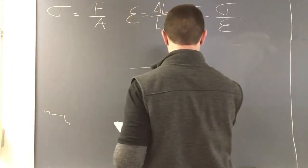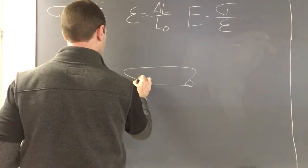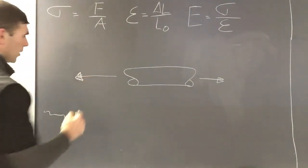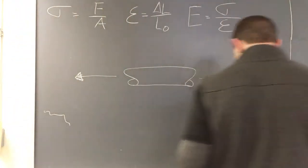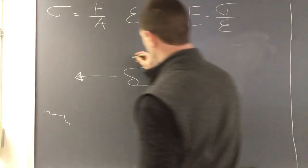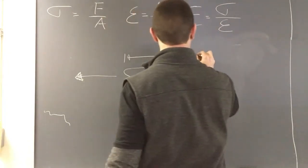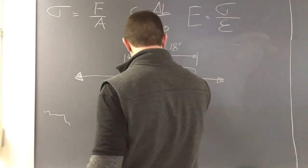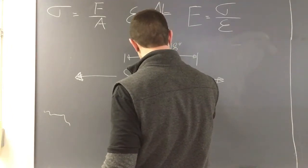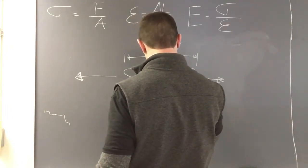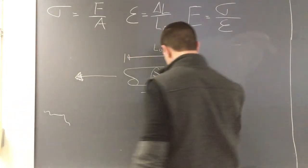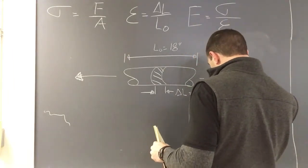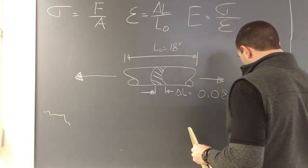For example, we're going to have a piece of aluminum that has a force acting on it, pulling it apart. The force is going to be of an unknown quantity, but we do have a little bit of information. We know the original length - the aluminum was 18 inches - and we know the change in length, and that's going to be 0.089 inches.